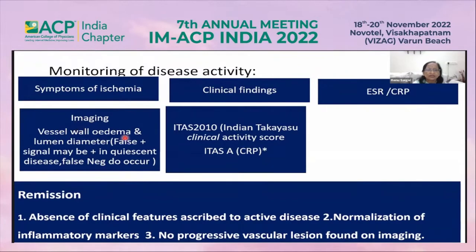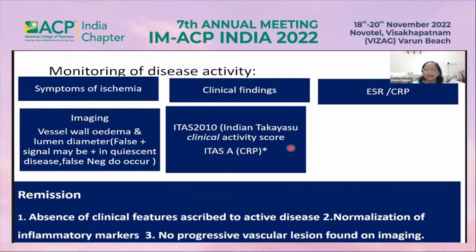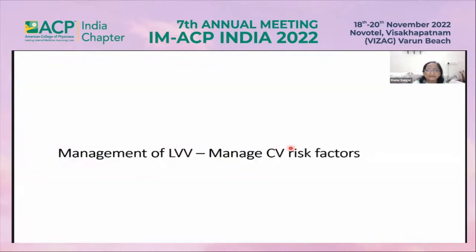False positives and false negatives do occur on imaging. This is the Indian Takayasu clinical activity score — the app can be downloaded from the internet and is a very good tool for monitoring activity. Remission means absence of all disease activity with normalization of all parameters.